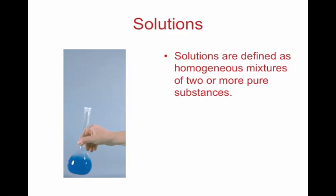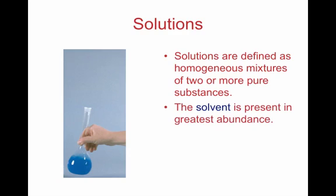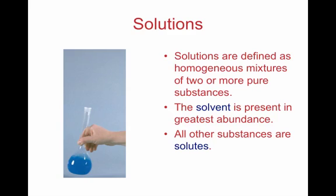A homogeneous mixture means it's the same throughout — you can't really distinguish between the particles. You typically have two parts of the solution: the solvent and the solute. The solvent is the chemical that is present in the greatest amount, and typically it's going to be the liquid. A solute is all the other stuff that's left — usually solids being dissolved, and sometimes it can even be a gas, especially when we're talking about acids.